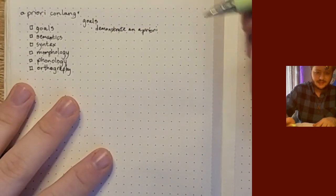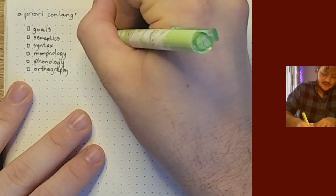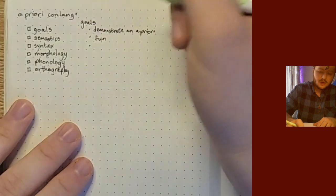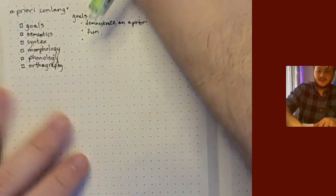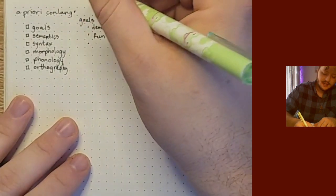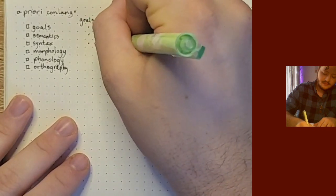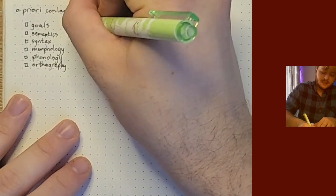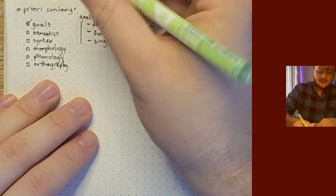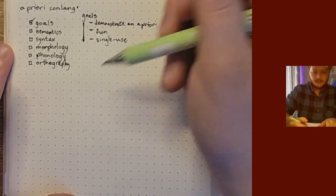I'm going to keep Twitch open in my browser since I have no other way to see the chat. So the first thing: let's talk about the goals. The goal of this conlang is to demonstrate an a priori language in an example-y way — thinking of things that would come up for other people making a priori languages. I want to do something cool and fun. I don't really intend to use this conlang personally — it's a single-use example language.